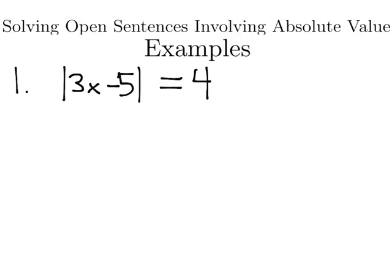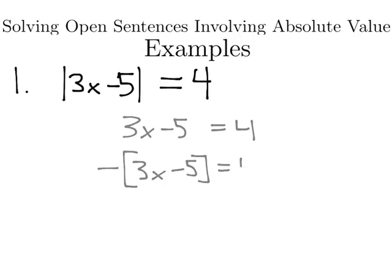Here I have the absolute value of some expression is equal to a number. What that really means is that this expression, 3x minus 5, could be equal to 4, or negative the expression, 3x minus 5, could be equal to 4. Because it's just the absolute value, that's the distance from 0. So this inside could either be positive that number or negative that number.